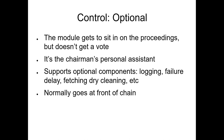'Optional' modules get to sit in on the proceedings, but they don't get a vote. They get to do things like make entries in lastlog, send log entries elsewhere, slow things down in case of a bad password. Optional modules normally go at the front of a chain — per every specification I've read, even though none are official. And since they all go at the front, that's why Debian and CentOS put them at the end of the chain.